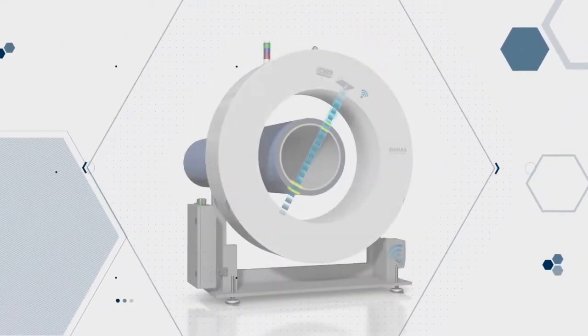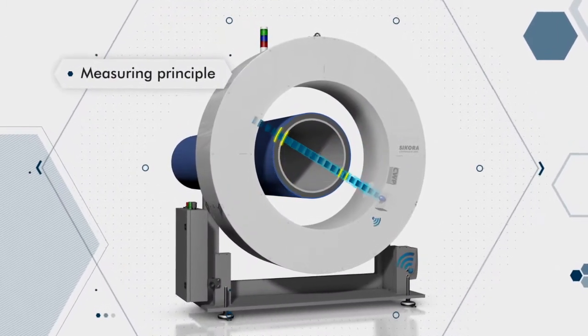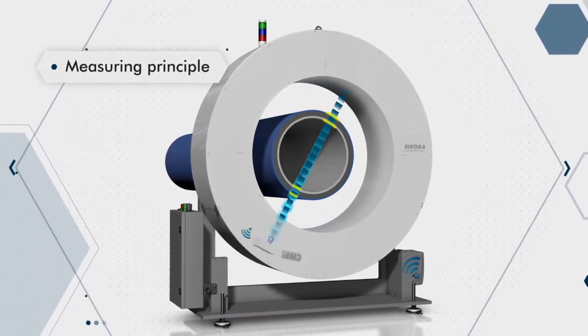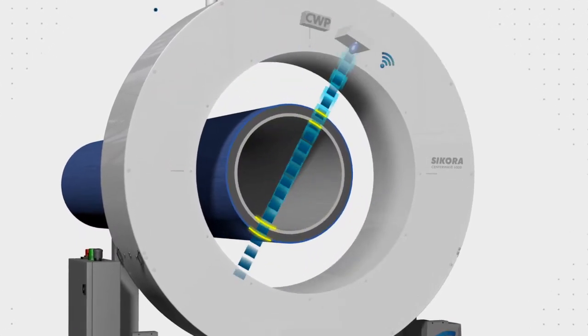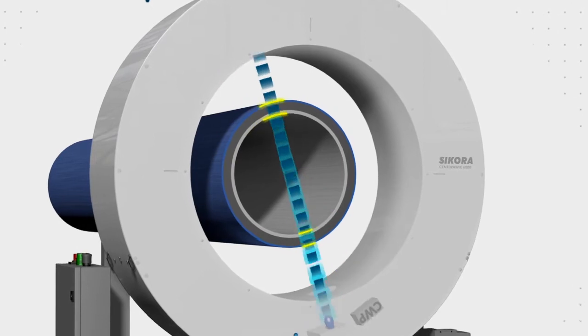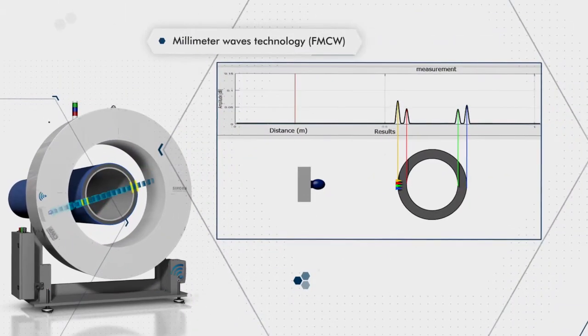One or several rotating transceivers continuously send and receive frequency modulated millimeter waves. Boundary layers, meaning each front and back side of the plastic pipe, reflect the radio waves.